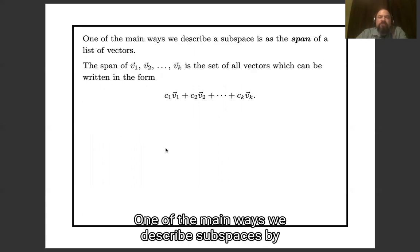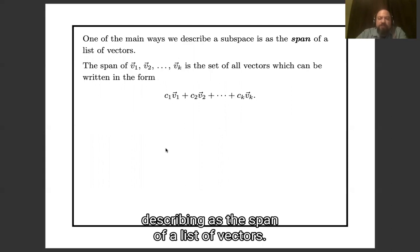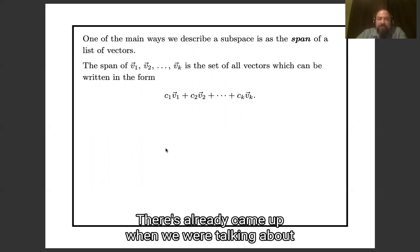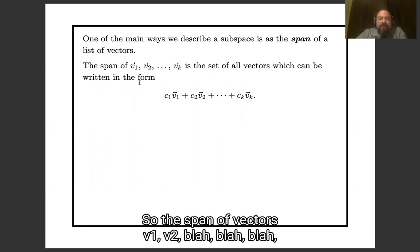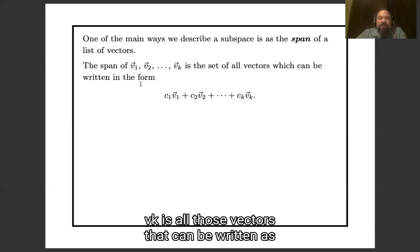One of the main ways we describe a subspace is by describing it as the span of a list of vectors. This already came up when we were talking about image in the previous lecture. So the span of vectors v1, v2, blah, blah, blah, vk,